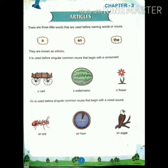An hour — spelled H-O-U-R. The spelling begins with H, but H is not a vowel. However, this word sounds like 'ar', and that sound is a vowel sound. That is why we write 'an hour'. Next, we have 'an eagle' — E is a vowel sound, so before this singular common noun we use 'an eagle'.